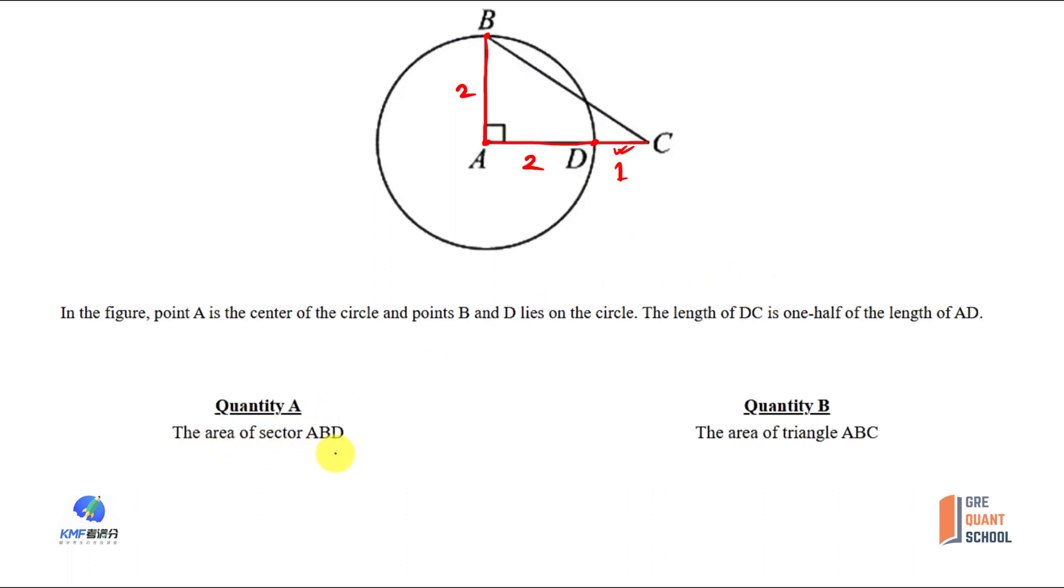Quantity A is the area of sector ABD. Quantity B is the area of triangle ABC.